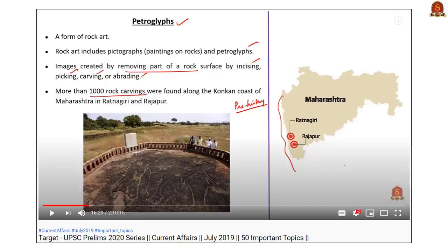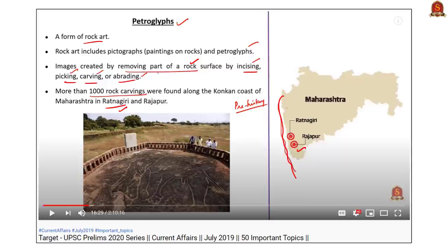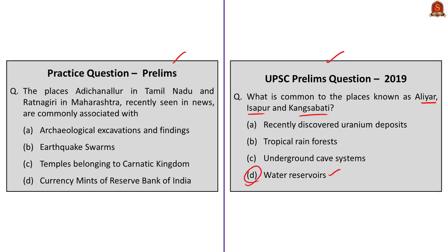This question was framed similar to a 2019 prelims question about places Aliyar, Isapur, and Kansabhati, where the correct answer was water reservoirs. In our July video of the Target UPSC Prelims 2020 series, we discussed Ratnagiri in Maharashtra, located along the Konkan coast, where more than a thousand petroglyphs were discovered in an archaeological excavation in the Ratnagiri and nearby Rajapur area. A petroglyph is a form of rock art consisting of images created by removing part of a rock surface by incising, picking, carving, or abrading. Whenever you come across commonly related news articles, try to list them for revision.